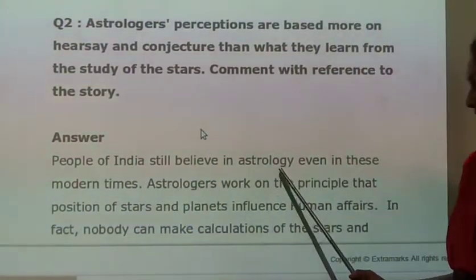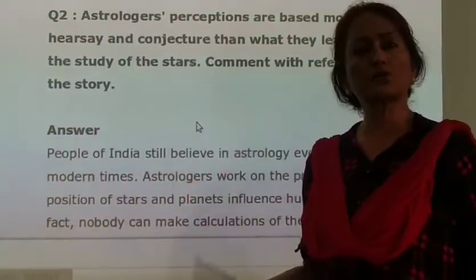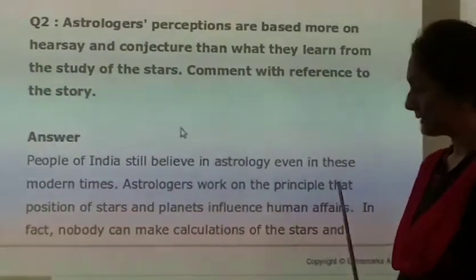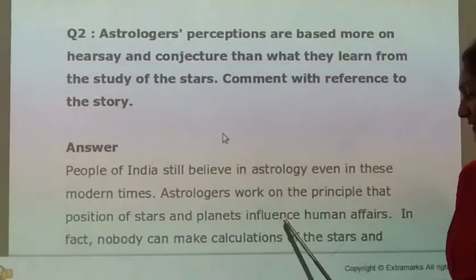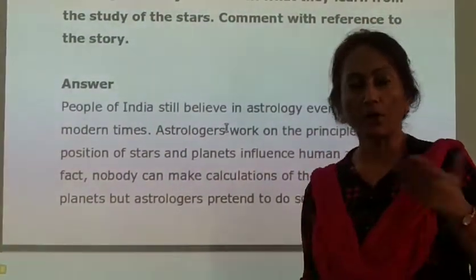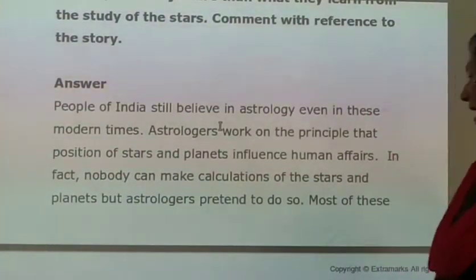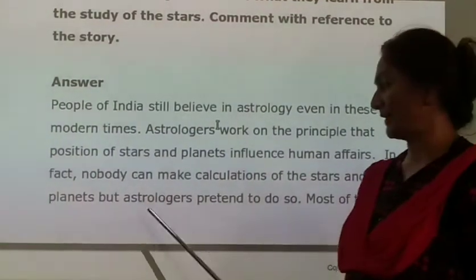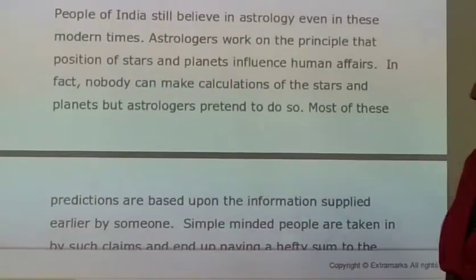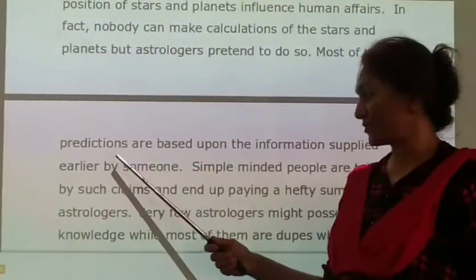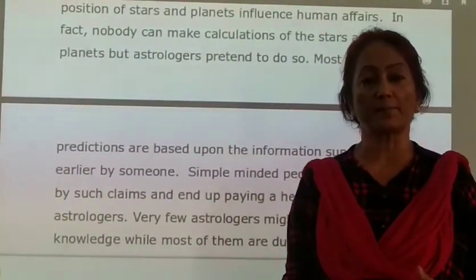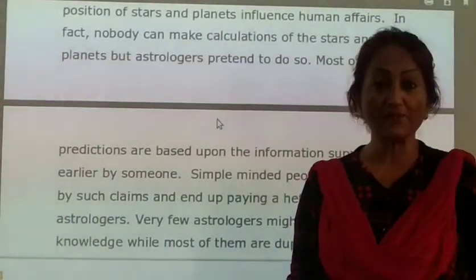People of India still believe in astrology even in these modern times. Astrologists work on the principle that the position of stars and planets influences human affairs. In fact, nobody can truly make calculations of the stars. Astrologists believe it all depends on the movement of the stars and celestial bodies. But astrologists pretend to do so. Most of these predictions are based upon information supplied earlier by someone.